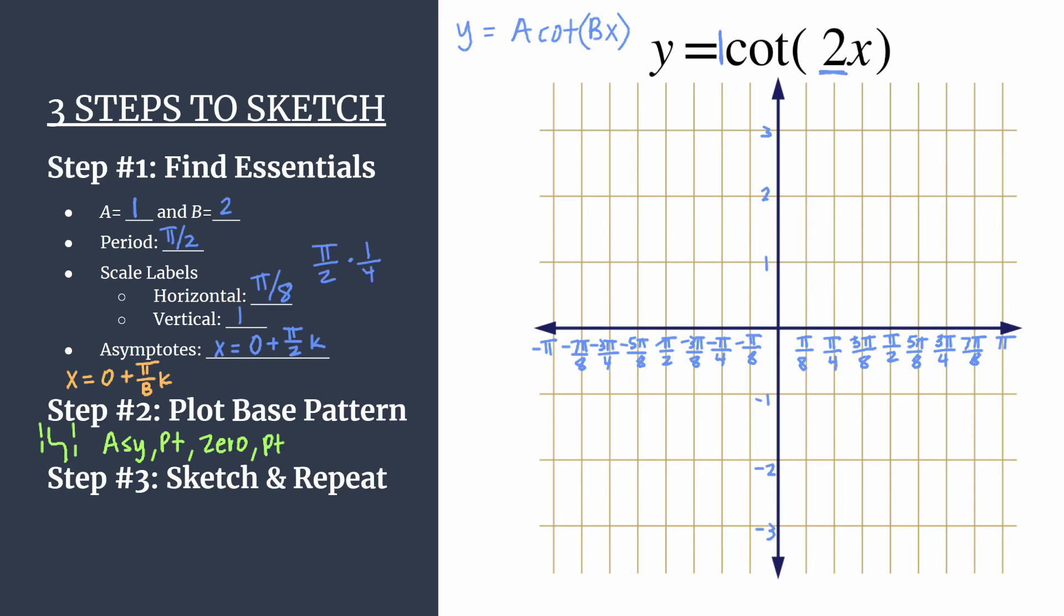So now let's go ahead and plot this base pattern. We're sketching our first cycle of cotangent 2x. So we start with this lovely asymptote on the y-axis. Our next feature in the base pattern is going to be a curve shaping point. It's the one with a higher value. Sometimes I call it the upper curve shaping point. Not very technical, but helps you know which one.